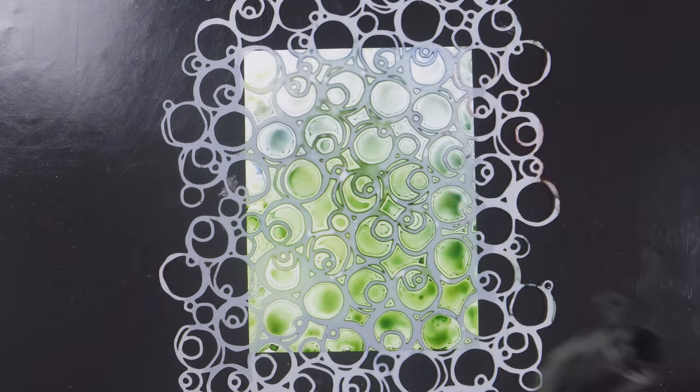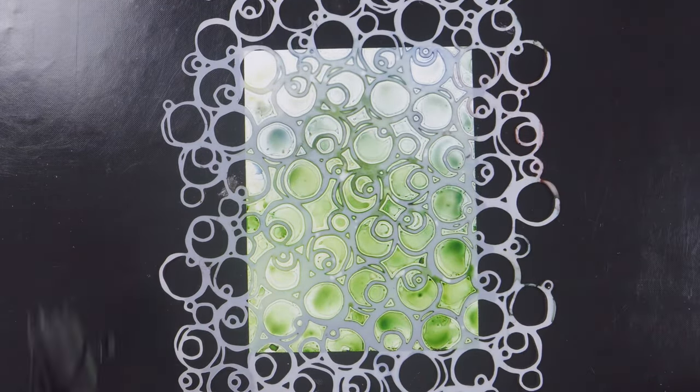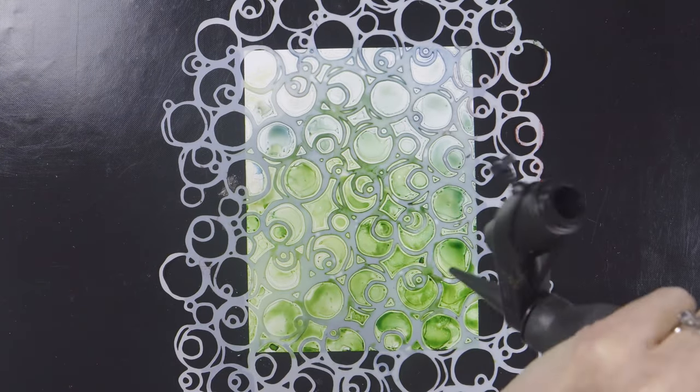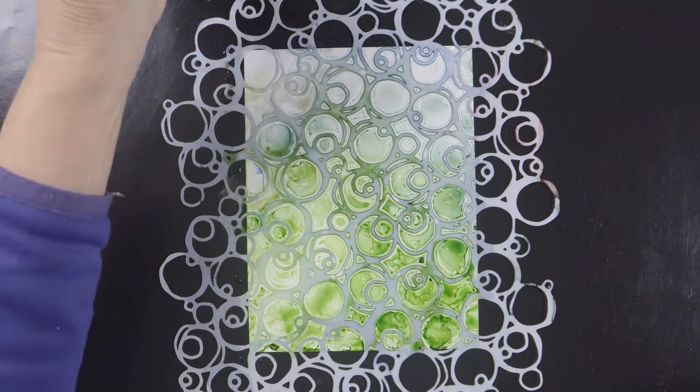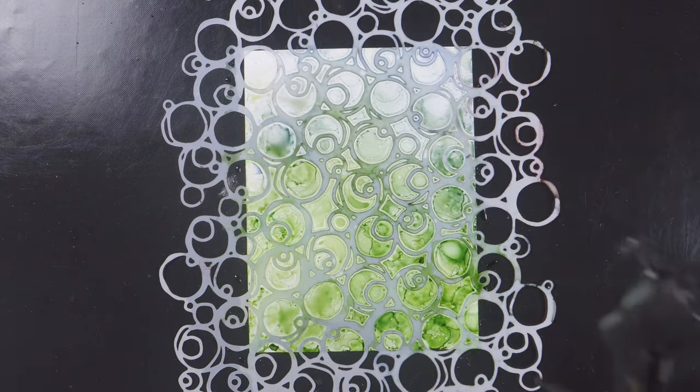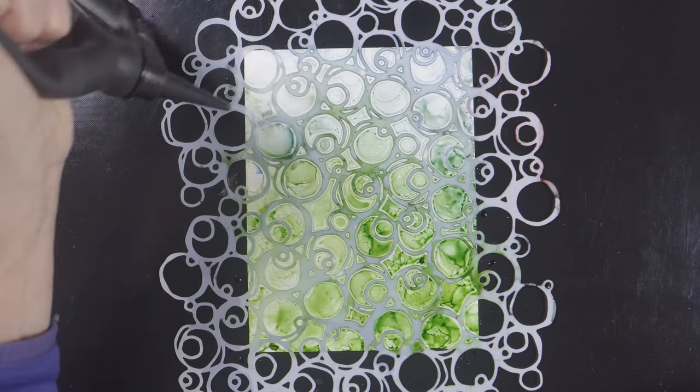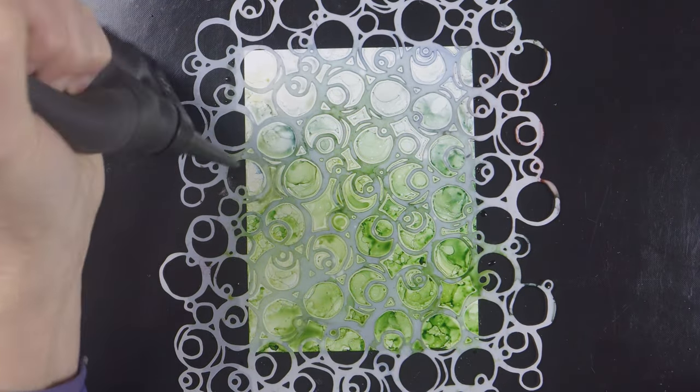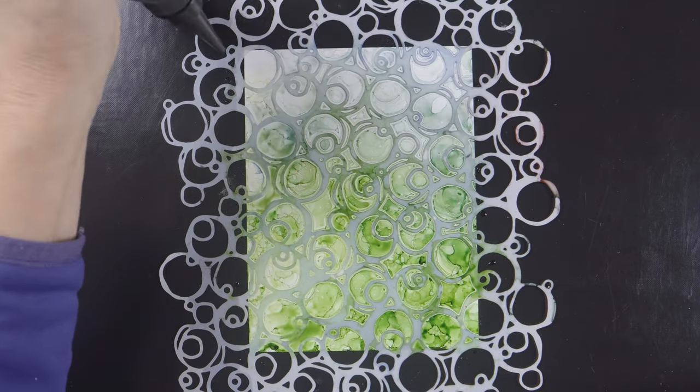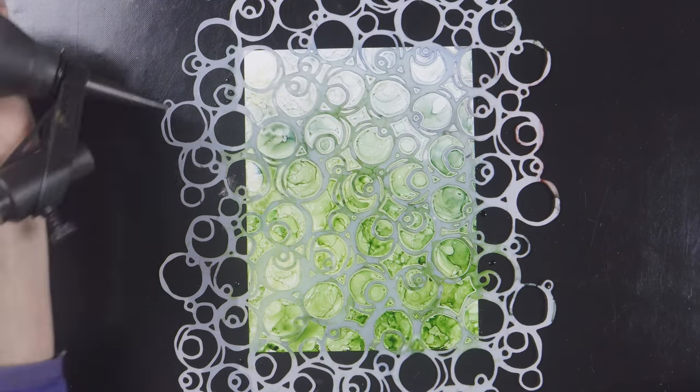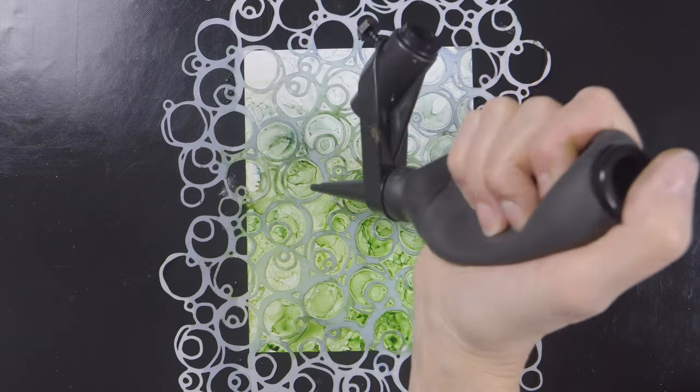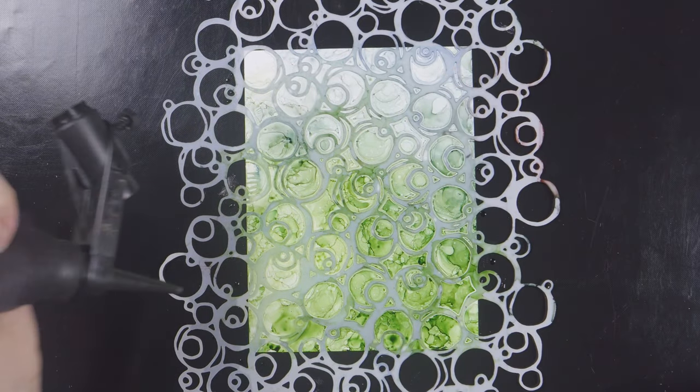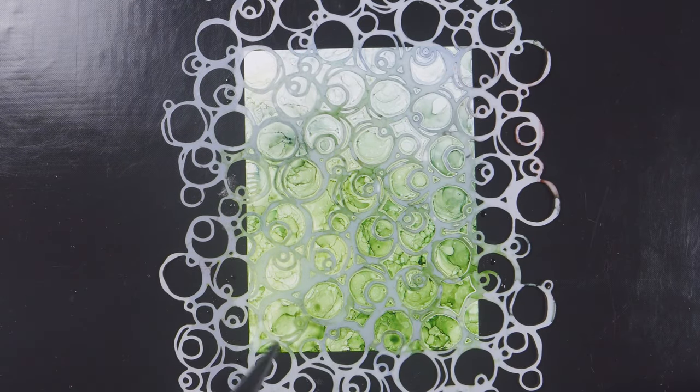Once I dropped the stencil on top, the alcohol inks kind of started gravitating towards the stencil themselves, so then I just started drying the ink without moving the stencil. I dry the ink in the exposed areas, but the air actually pushes ink from underneath the stencil out into those exposed areas as well.